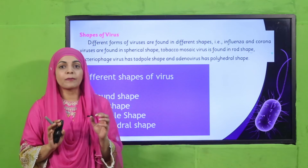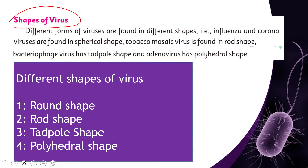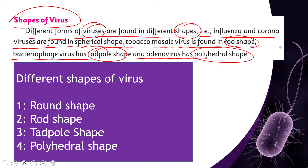Now let's discuss about the shapes of viruses. Different forms of viruses are found in different shapes. Influenza and coronaviruses are found in spherical shape. Tobacco mosaic virus is found in rod shape. Bacteriophage virus has a tadpole shape. And adenovirus has a polyhedral shape. So the different shapes of viruses are: round, rod, tadpole, and polyhedral.